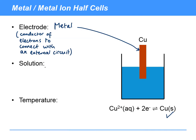We need a solution that contains Cu²⁺ ions at the concentration of 1 mol dm⁻³. That's the standard concentration that you'll need to make sure you know: 1 mol dm⁻³. For example, we might want to use copper sulfate solution.